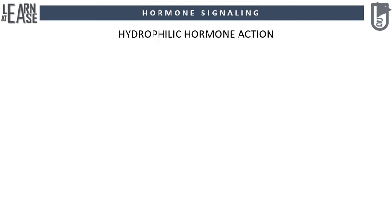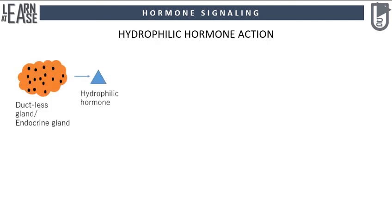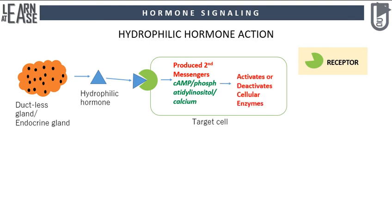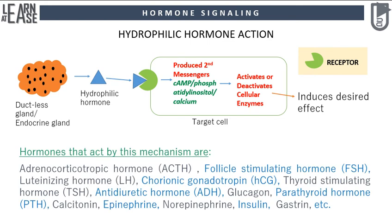Now I will explain hydrophilic hormone action. An endocrine gland releases a hydrophilic hormone; this hormone travels in the blood and reaches the target cell. The receptor of a hydrophilic hormone is present on the cell membrane. As the hormone is hydrophilic, it cannot enter the cell. On the cell membrane, the hormone binds the receptor, then the receptor induces the release of a second messenger inside the cell. These second messengers activate or deactivate cellular enzymes through phosphorylation, which ultimately induces the desired effect. Hormones that act by this mechanism include ACTH, FSH, LH, chorionic gonadotropin, TSH, ADH, glucagon, parathyroid hormone, calcitonin, epinephrine, norepinephrine, insulin, gastrin, etc.